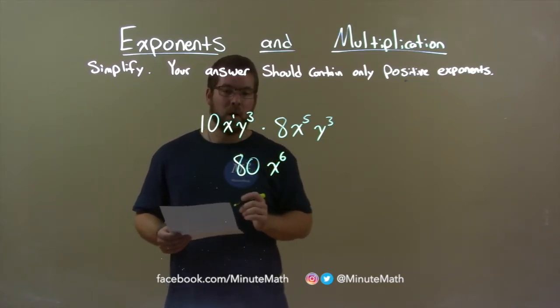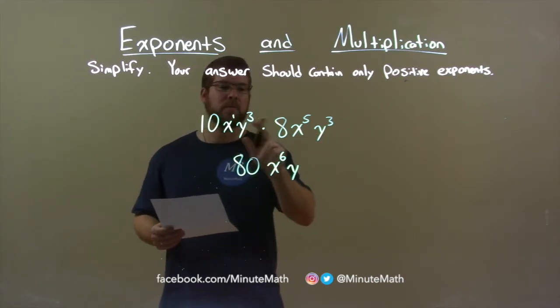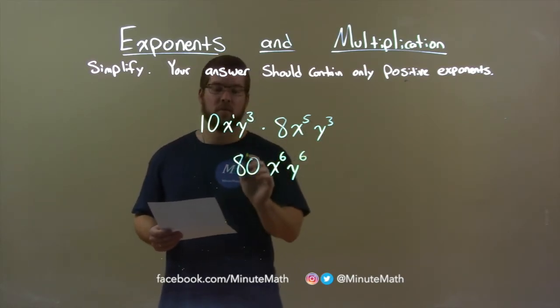Lastly, we see the variable y. y to the 3rd times y to the 3rd. We add the exponents, and 3 plus 3 is 6, giving us our final answer.